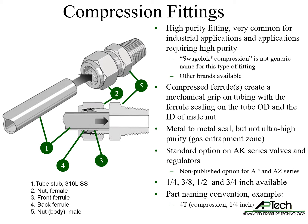The machined compression connection is a standard option for the AK-series valves and regulators, and a welded compression connection is a non-published option for the AP and AZ-series valves and regulators. Sizes from 1/4 to 3/4 inch are available. An example of the compression connection naming convention is 4T, meaning compression connection 1/4 inch.